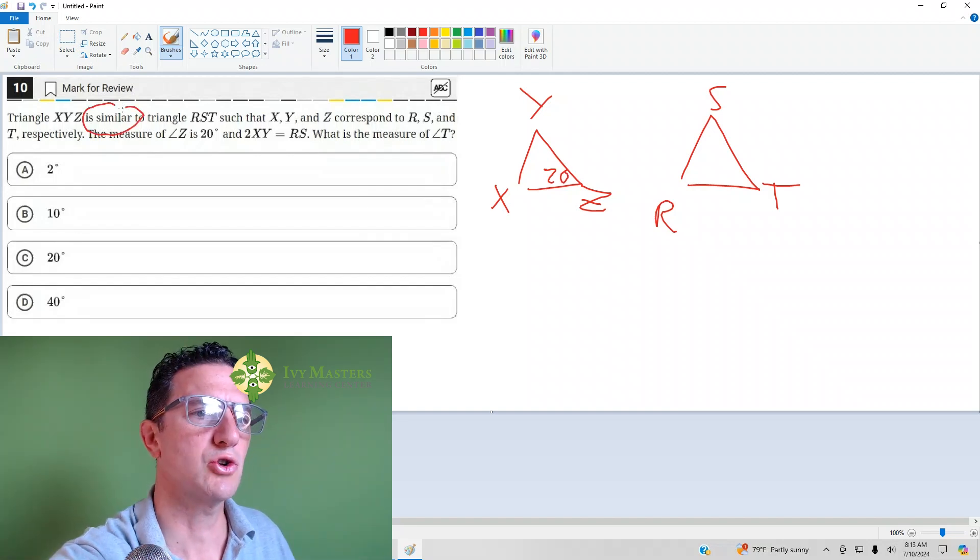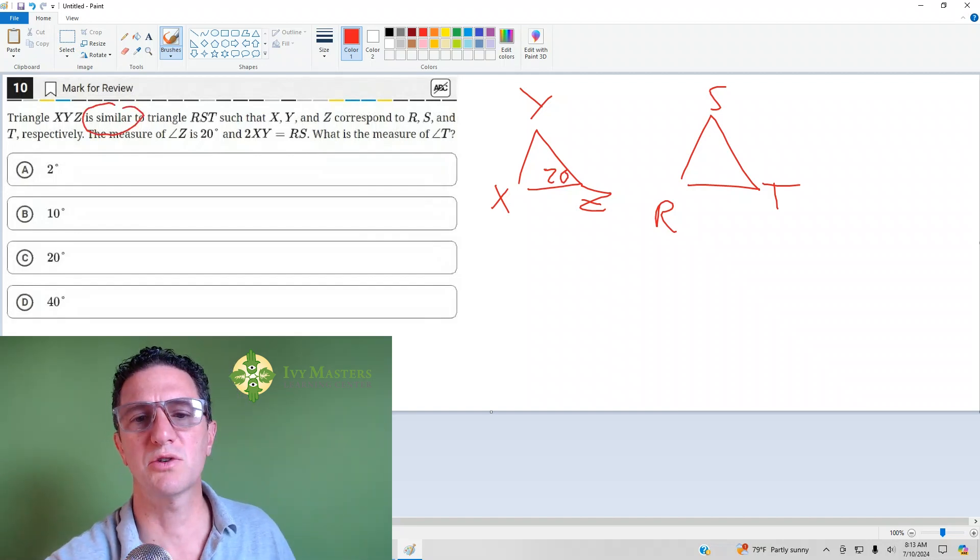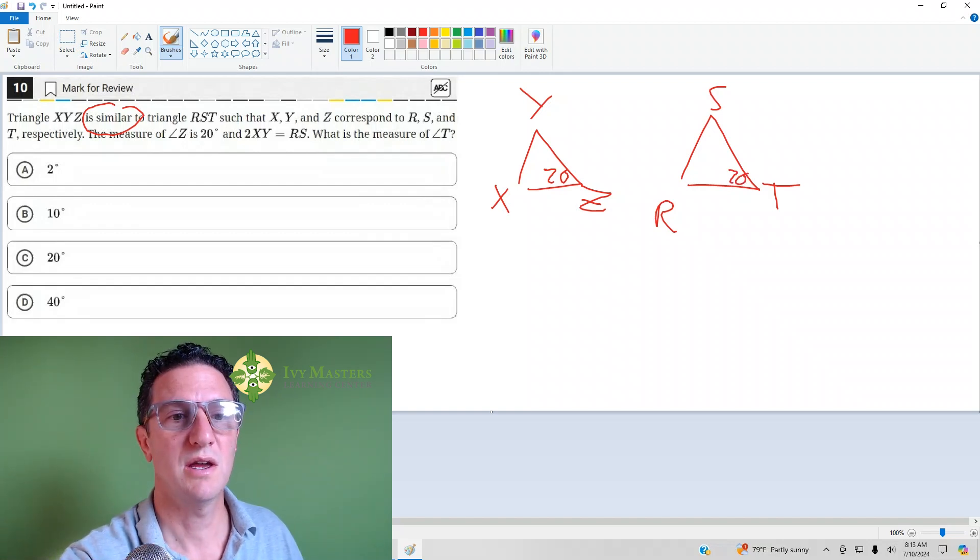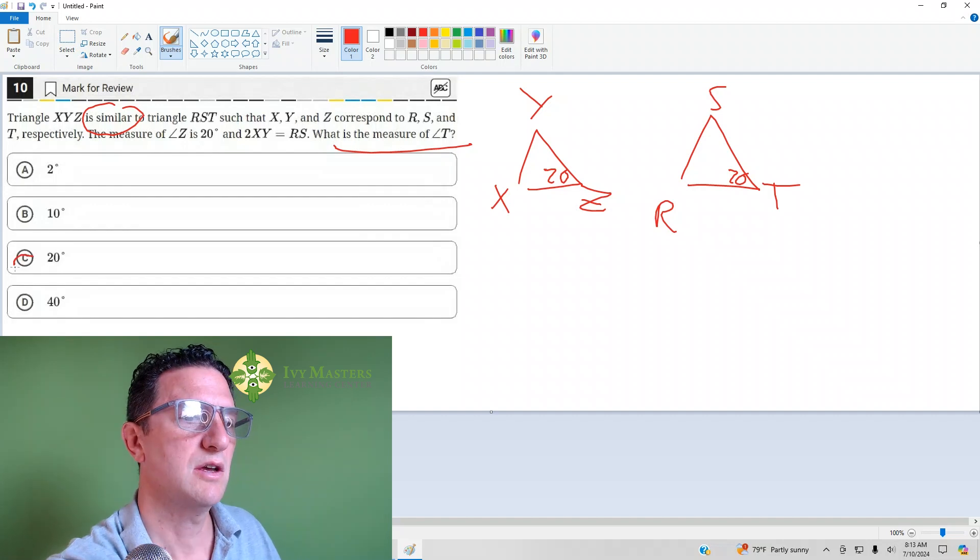What you've got to know is that for similar triangles, corresponding angle measures are going to have the same measure. So if Z is 20 degrees, then T has to be 20 degrees. And that's the question. What's the measure of angle T? 20 degrees.